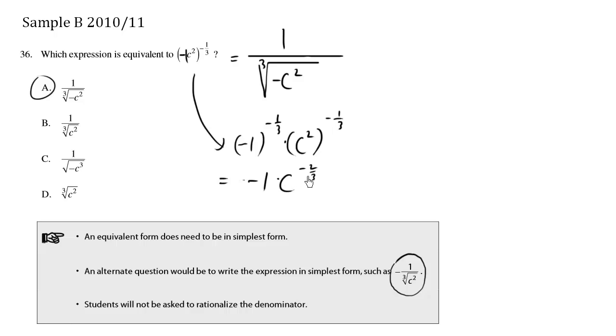And so we have this negative sign here. This equals negative something, and the something happens to be 1 over c to the 2 thirds. We're using the reciprocal because we're changing the sign here, c to the 2 thirds.